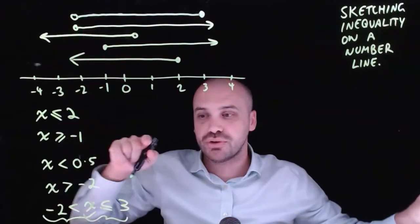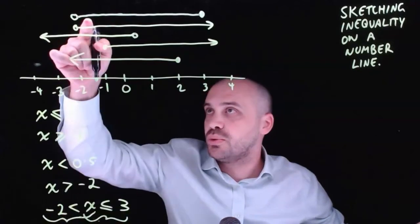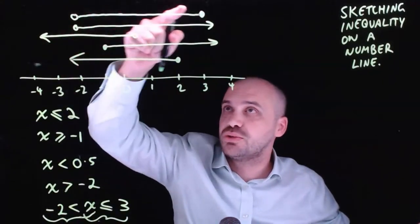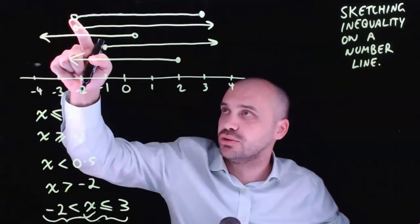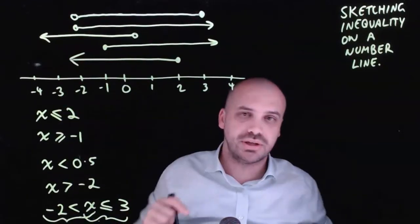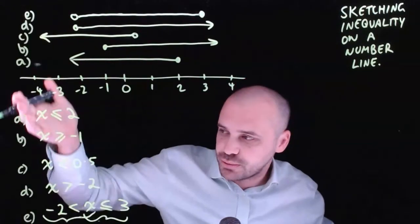And when we look at the picture I've drawn, that's what we've got. We're between negative 2 and 3, not including negative 2 but yes including 3. I've labelled those examples for you.